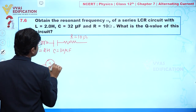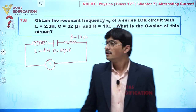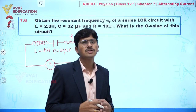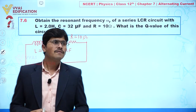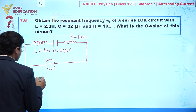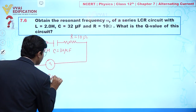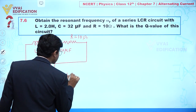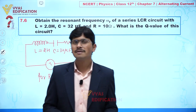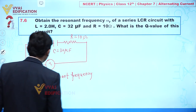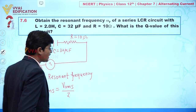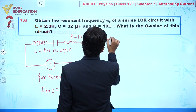The circuit is connected with an AC source. Now we have to find the resonant frequency. Resonant frequency occurs when the frequency of this circuit equals the natural frequency. Resonant frequency means we are getting the maximum value of current. If we talk about I_rms, this is written as V_rms divided by Z.